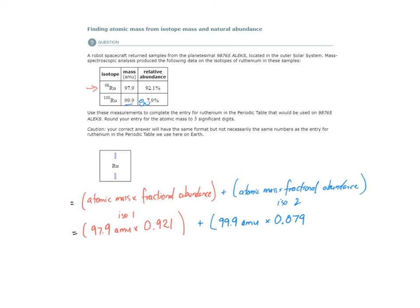Many students make that mistake. For single-digit relative abundances, they only move the decimal place to the left once. But you want to make sure to always divide by 100, or move the decimal place to the left twice.